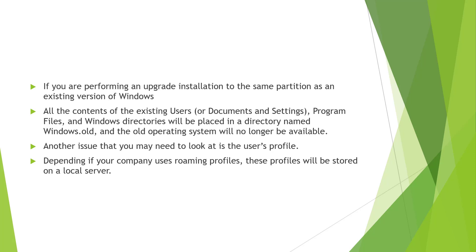Another issue to look into is user profiles. Depending on how your organization handles user profiles — if they are local, that's one thing; if they're roaming profiles, that is totally different. A roaming profile is stored on a server, as opposed to a local profile which is stored locally on your machine. Upgrading from one version of Windows to another may have issues with different profile versions, so that is definitely a consideration.